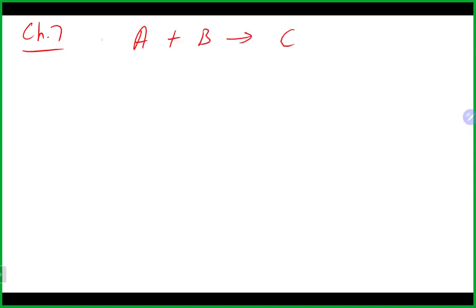We're going to continue on with Chapter 7. Last time we talked about equations and how to write and balance equations. Remember that when we do balance equations, we want to make sure all of our coefficients are always whole numbers. You can use a fraction to balance the equation, but you need to clear it at the end and end up with the simplest whole numbers possible.